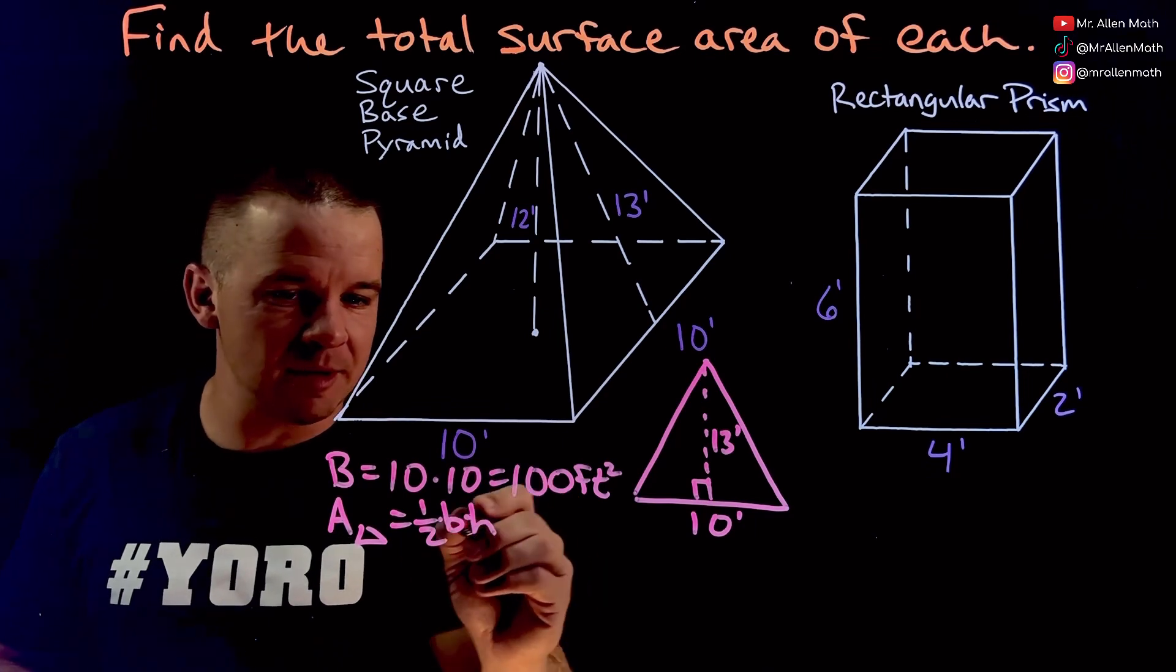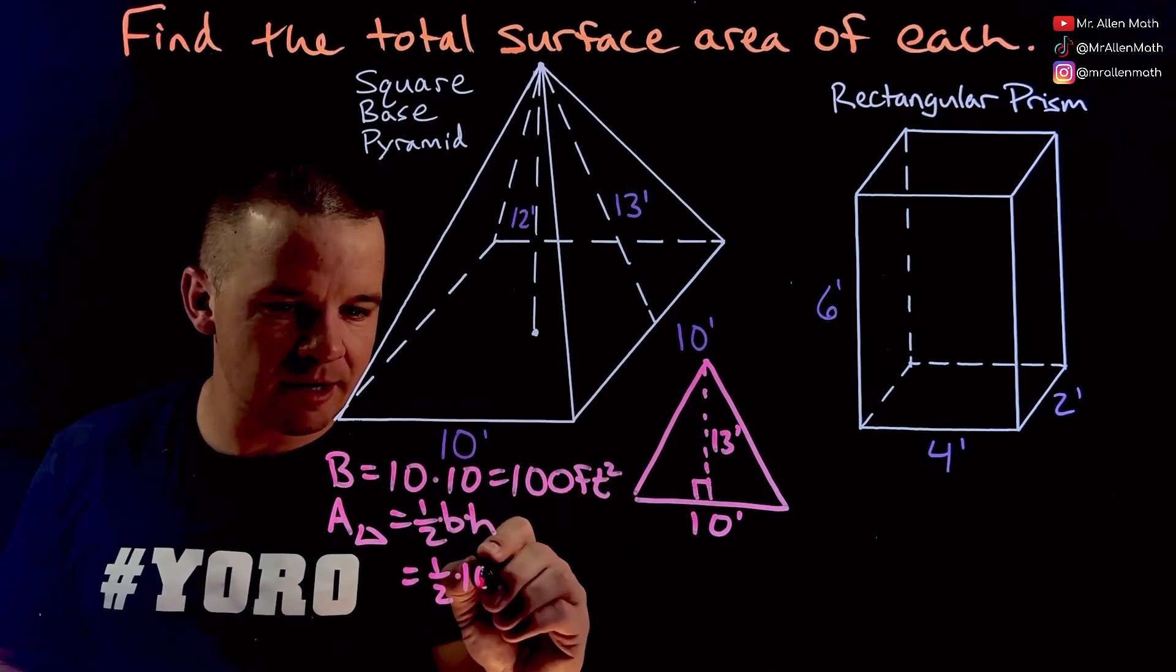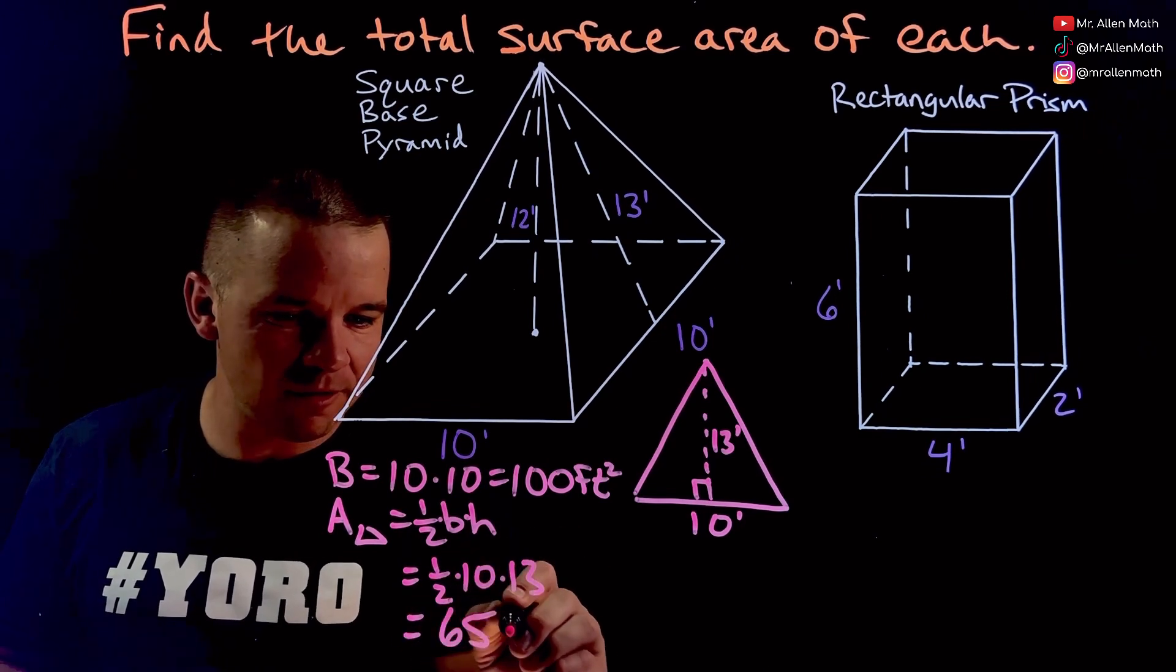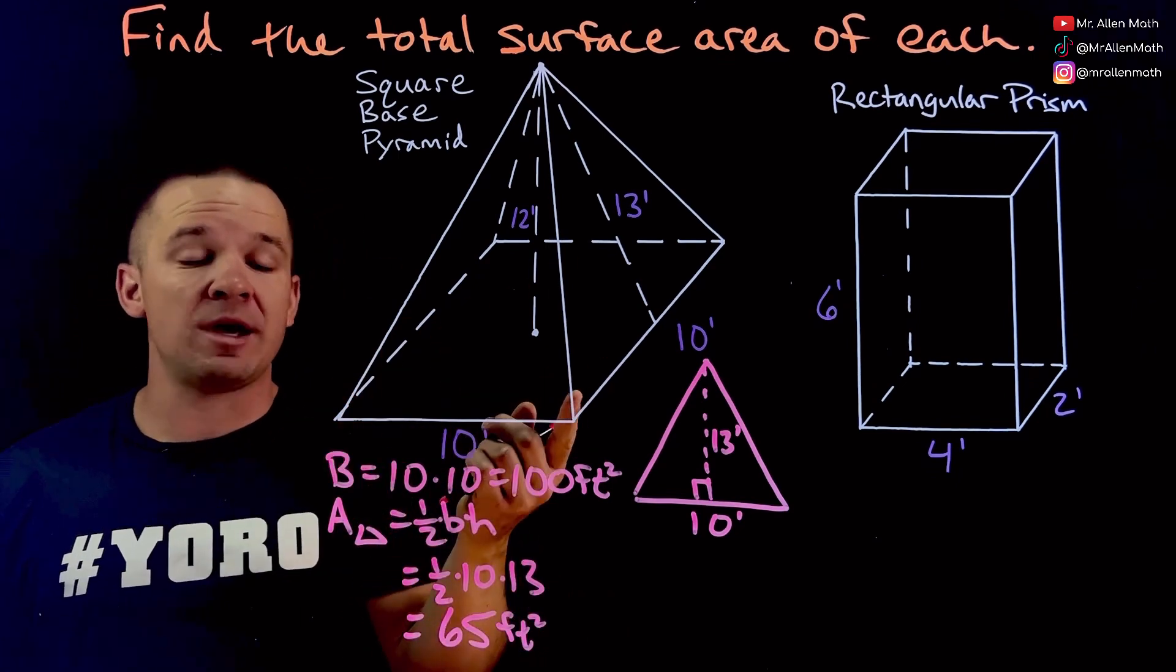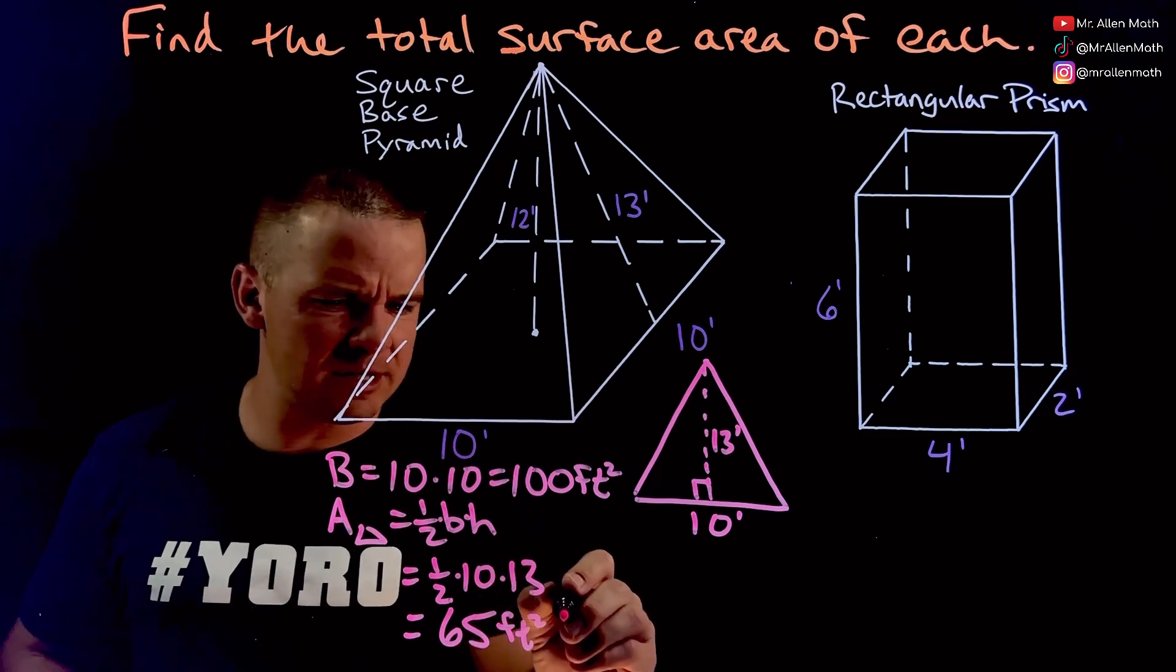So area of our triangle is going to be then, let's see here, one half base which is 10 times the height which is 13, so that is 65 feet squared for one of those faces. How many of those triangles do we have? We've got four.